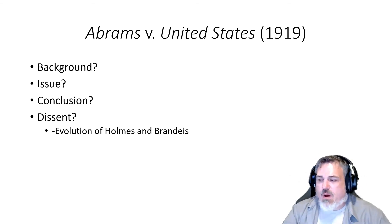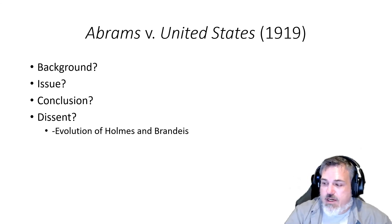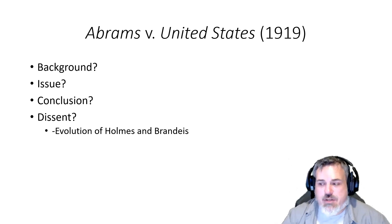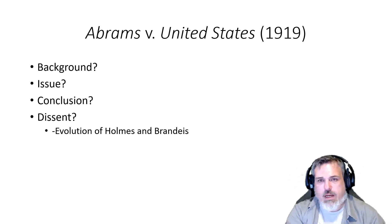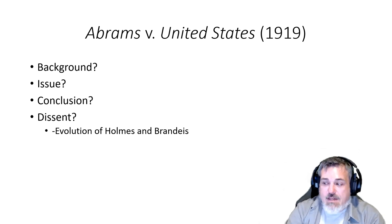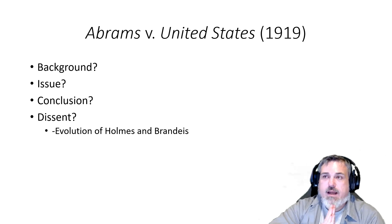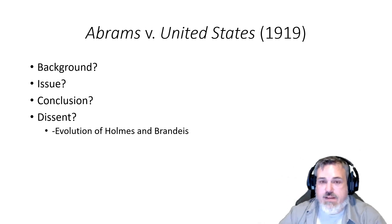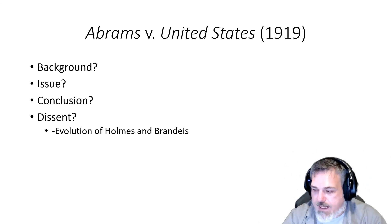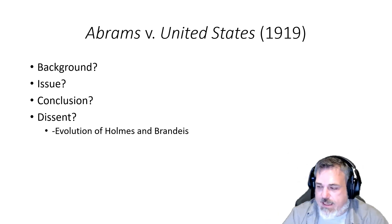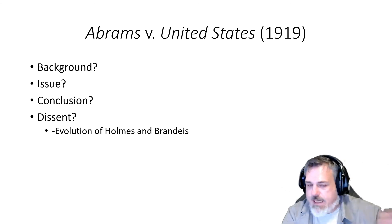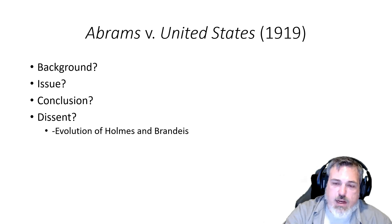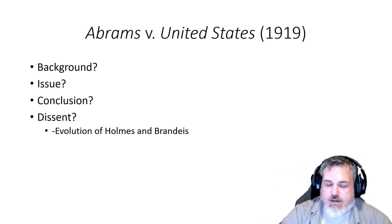Holmes continues that only the emergency that makes it immediately dangerous to leave the correction of evil counsels to time warrants making any exception to the sweeping command that Congress shall make no law. His argument is that there are very few exceptions under which Congress should be able to quash speech — only when there is a direct correlation between speech occurring and a likelihood of evil following it. But in this case, that is not the circumstance, and therefore this restriction is too far for Holmes and Brandeis. Ultimately, the majority follows in the path of Schenck while simultaneously not using the language of Schenck, again quashing and prosecuting individuals for advocating action during wartime.